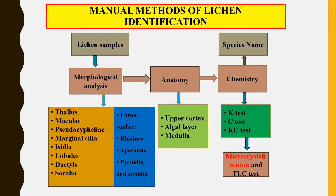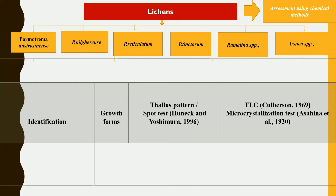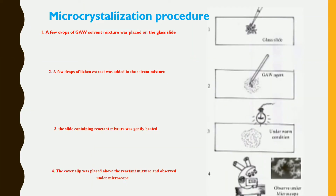Manual identification methods were used, including morphological analysis, spot test, micro crystallization test, and TLC. We used standard procedures for the identification of lichen species. Micro crystallization is a very important procedure we have used.